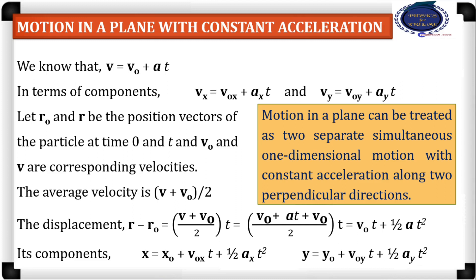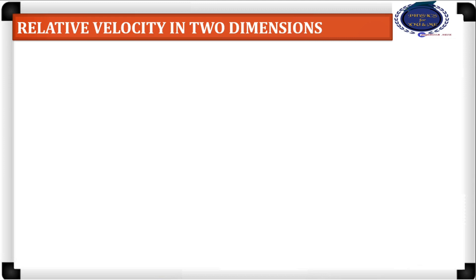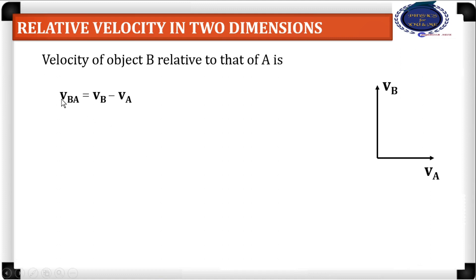Motion in a plane is an extension of motion in a straight line. For relative velocity: particle A has velocity vA and particle B has velocity vB, which are not along the same straight line. The relative velocity of B with respect to A is represented as vB minus vA. The direction of minus vA is opposite to vA but of the same magnitude. Using the triangle law of vector addition, we can find vB minus vA, which represents the relative velocity.